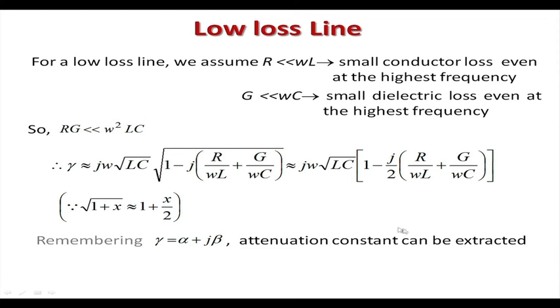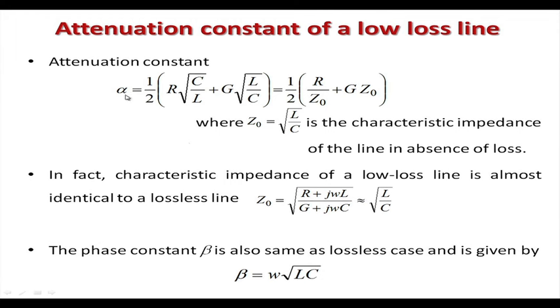With these approximations, the propagation constant simplifies. The attenuation constant α equals the real part of the resulting complex number. From that equation, α = (1/2)(R/Z₀ + GZ₀). So if you know the RLGC parameters of the transmission line, you can simply find the attenuation constant.